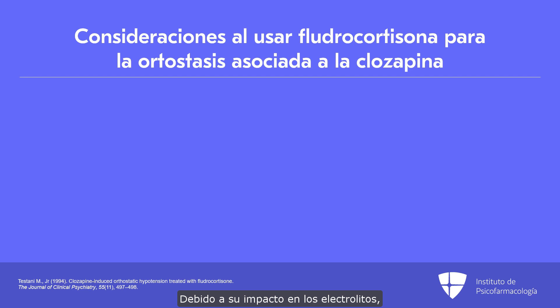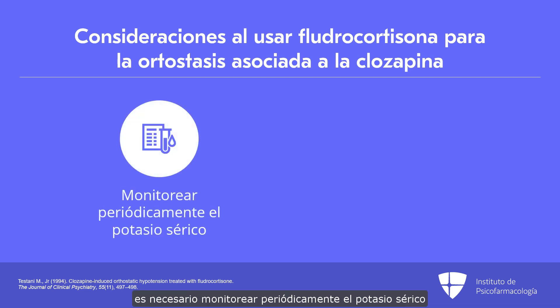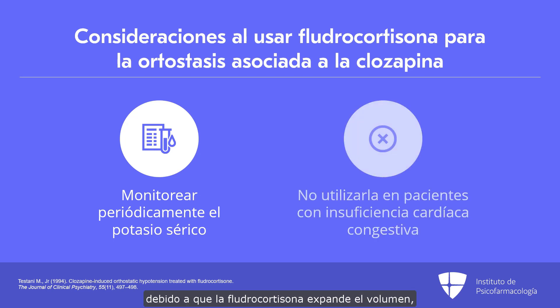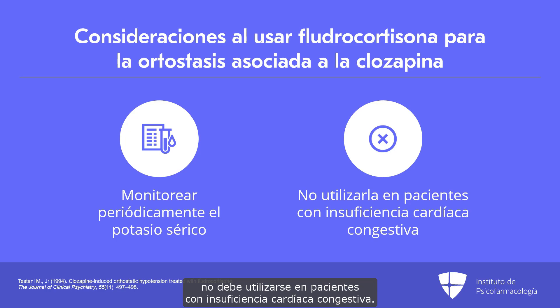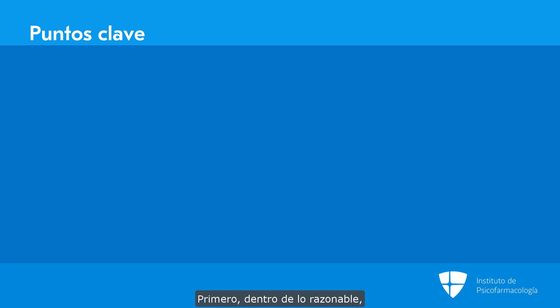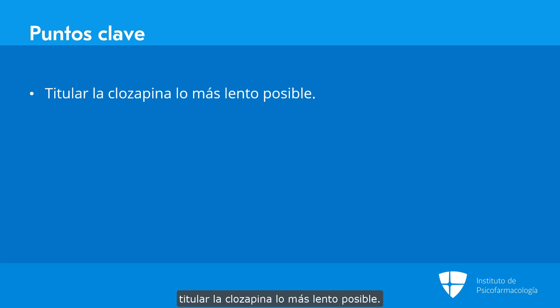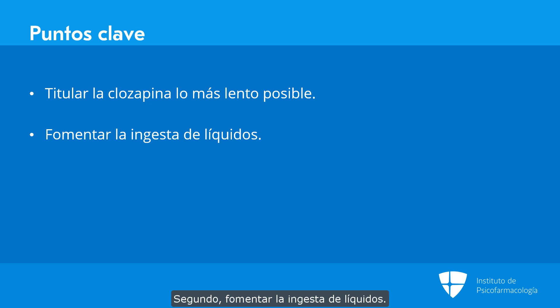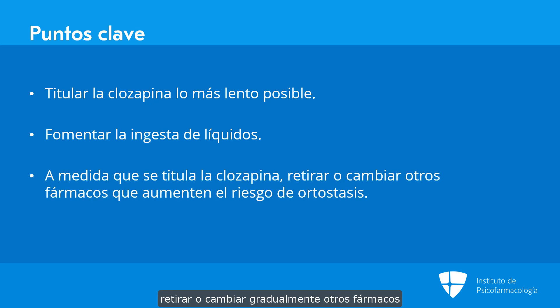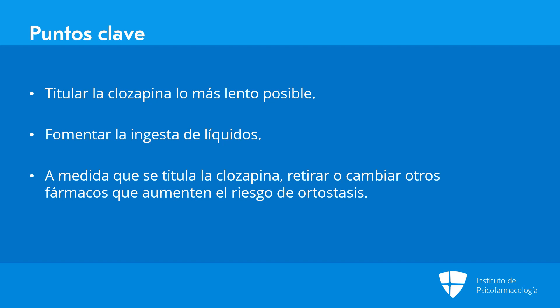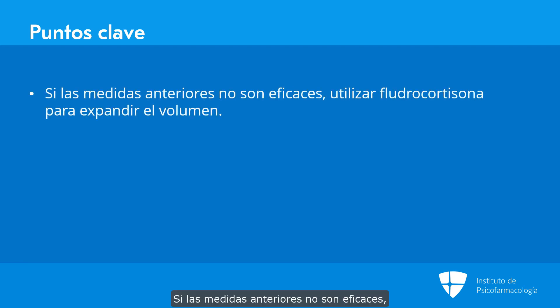Because of its impact on electrolytes, you should monitor serum potassium periodically to look for hypokalemia. Most importantly, because you're volume expanding, you cannot use fludrocortisone in patients with congestive heart failure. The key points: number one, use the slowest titration that seems reasonable; number two, encourage fluid intake; slowly remove or change other medications that contribute to orthostasis risk as clozapine is titrated. If all of the above measures are not effective, use fludrocortisone for volume expansion.